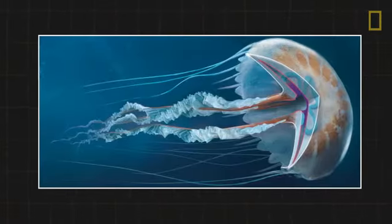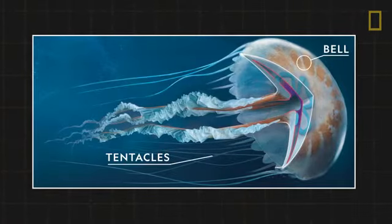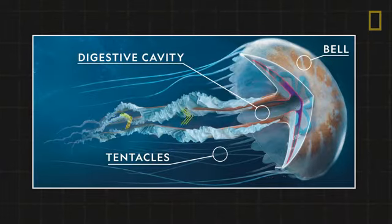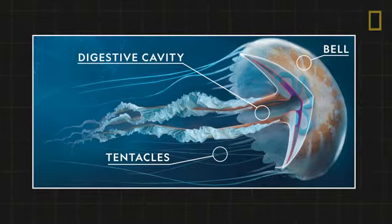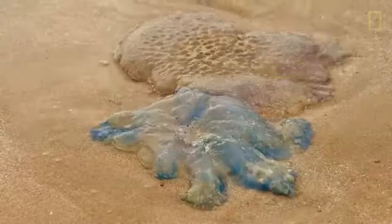Jellyfish do have very basic sensory organs in their bells and tentacles, and a simple digestive cavity which serves as a stomach, intestine, and esophagus. If a jellyfish washes up on the beach, it will mostly evaporate due to the high water content.